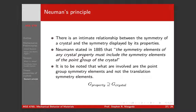Which means that if you have a cubic crystal, your properties cannot have a lower symmetry than the crystal. They can have a higher symmetry. For example, thermal expansion in cubic crystals is isotropic, which is an infinite symmetry. But you can never have a lower symmetry. And it's important that these are the point group symmetry elements, and they don't include any of the translation symmetry elements.